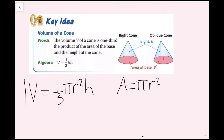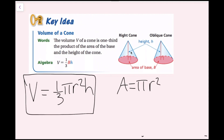This is the volume formula for a cone that we're going to use. Notice we have a right circular cone and an oblique circular cone here — it doesn't matter because we're going to use the same formula for each. The base area is pi r squared, times one-third of the height, and that gives us the volume of the cone no matter what.